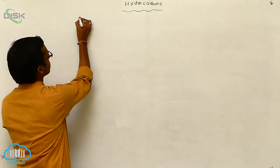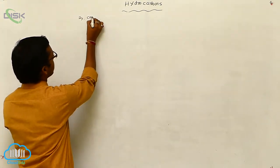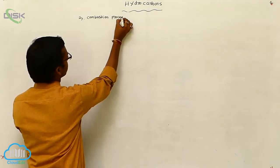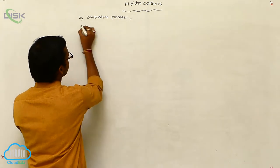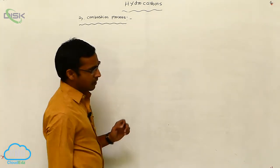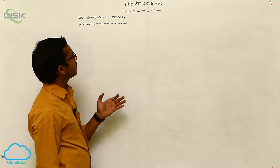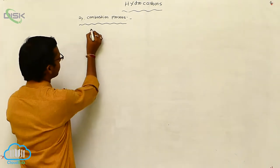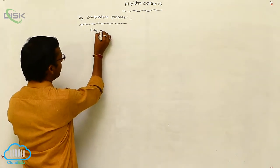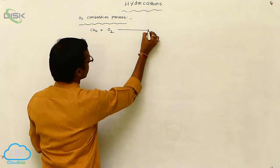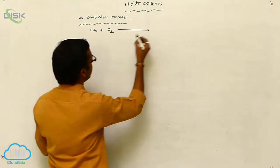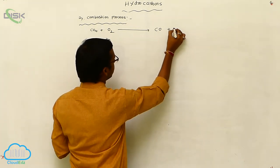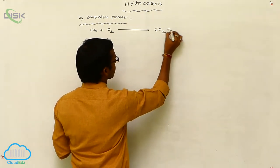Now second, after the completion of the second property, we discuss the combustion process. So the hydrocarbons are heated with a sufficient amount of oxygen to produce various products. For example, methane — when methane is reacted with oxygen in the presence of more oxygen, it gives carbon dioxide and water.